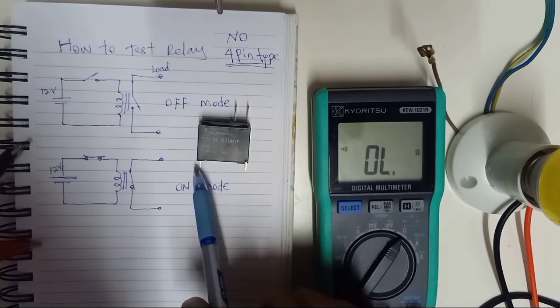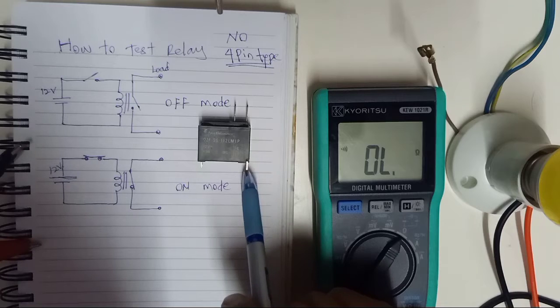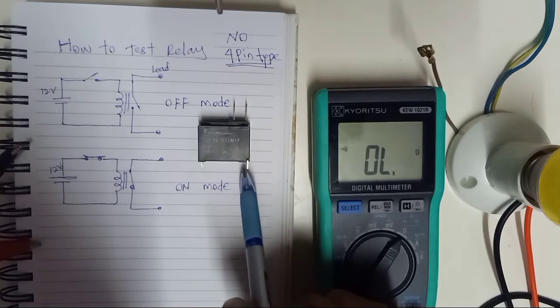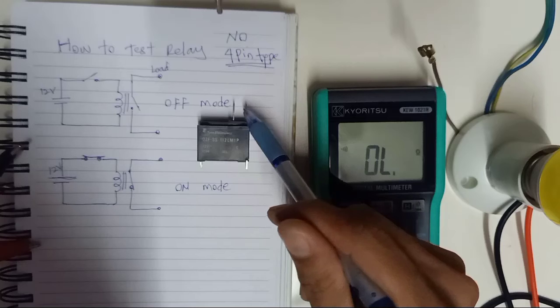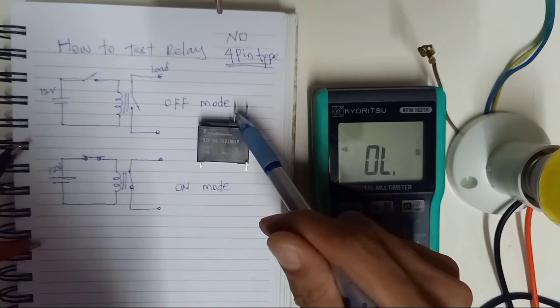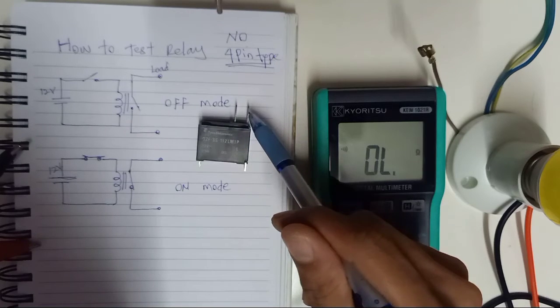On the relay you will see there are two pins on one side, a small 2-pin for the PCB, and on this side for the load which has bigger size pins.